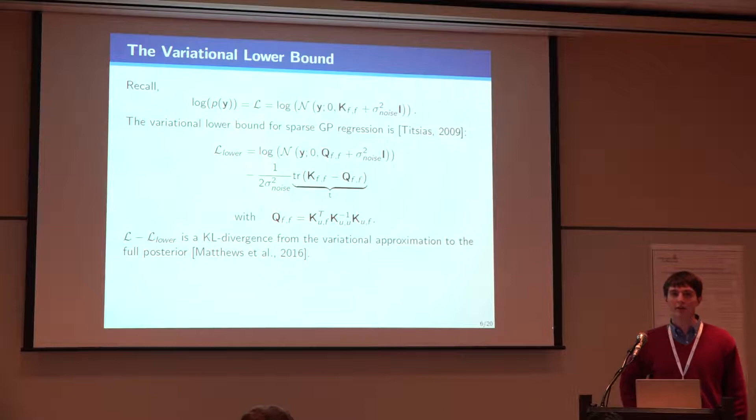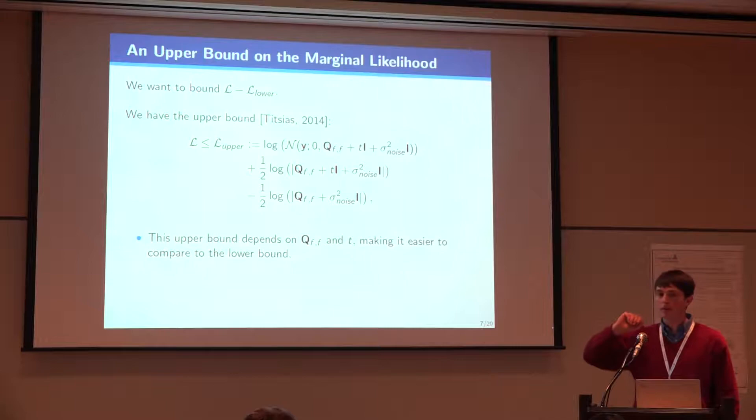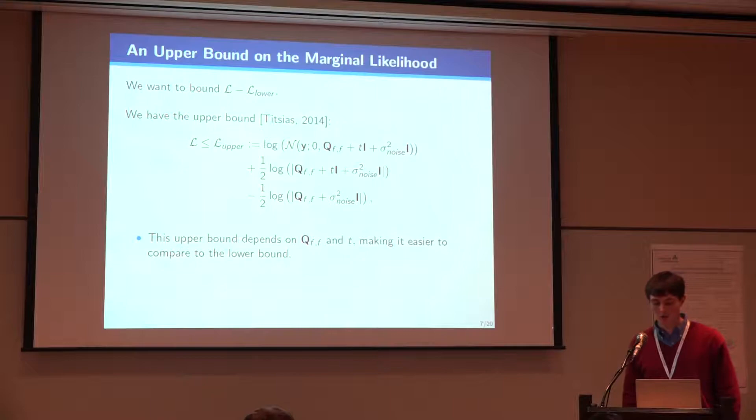Importantly, on a theoretical level, we know that the gap between these two is a KL divergence from the variational approximation to the full posterior process. So if we want to bound this KL divergence, we need to bound this gap. But the full likelihood depends on the empirical covariance matrix, and that's a bit hard to get a handle on.